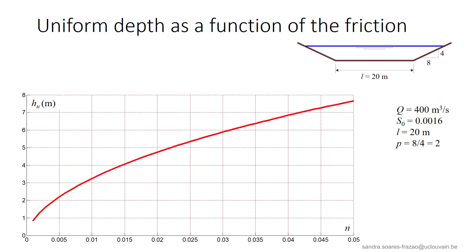We can see the evolution of the uniform depth as a function of the friction coefficient. For a higher friction coefficient, the uniform depth will be larger, in order to maintain a constant discharge, as the velocity will decrease due to friction. Indeed, a larger mass of water is required to counterbalance the increased friction force.